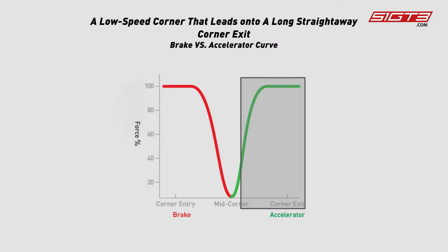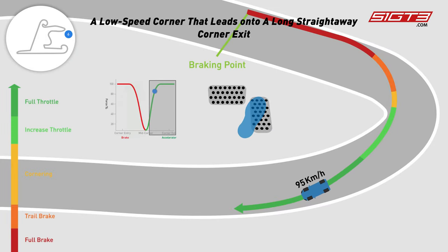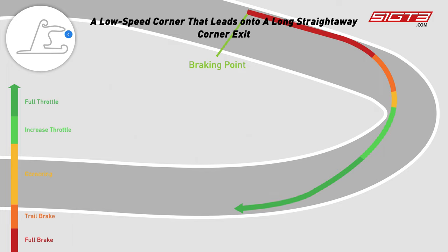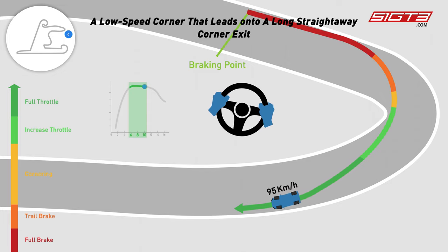The right part of this brake versus accelerator curve represents the corner exit phase. Notice how we should change our throttle input during this phase. What we want to do during this phase is to increase our throttle input gradually and keep the tire slippage under control. Meanwhile, we want to control the steering wheel and create the best slip angle to get good traction and maximum tire grip.